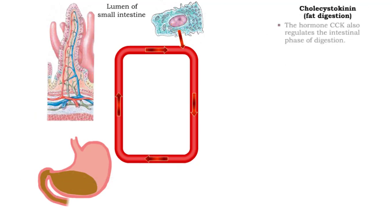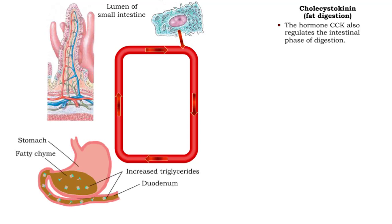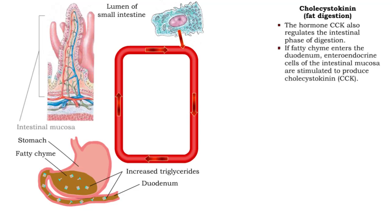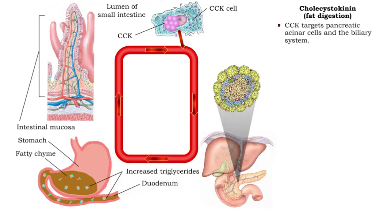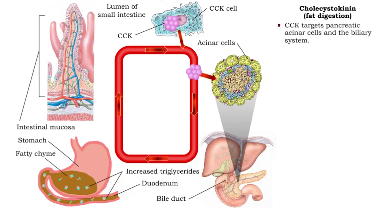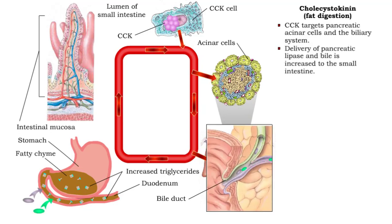The hormone cholecystokinin also regulates the intestinal phase of digestion. If fatty chyme enters the duodenum, enteroendocrine cells of the intestinal mucosa are stimulated to produce cholecystokinin, or CCK. CCK targets pancreatic acinar cells and bile ducts.